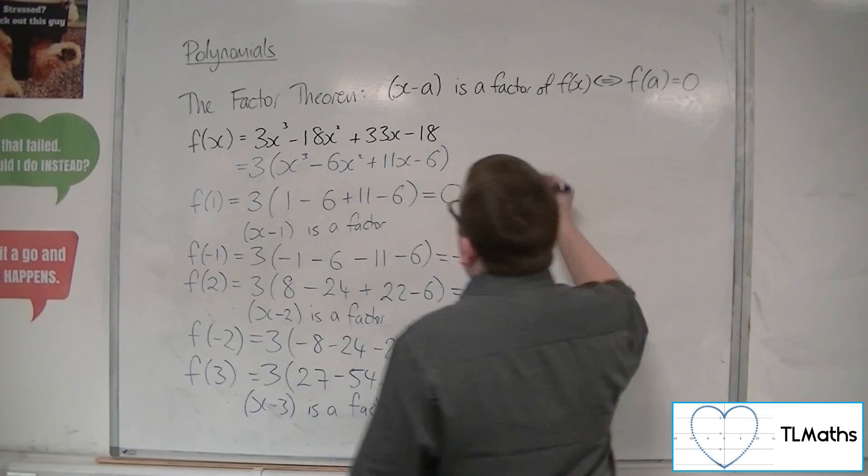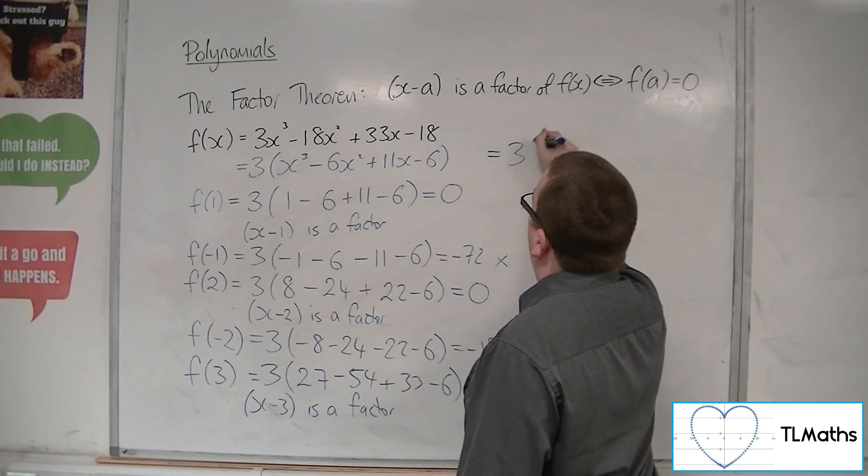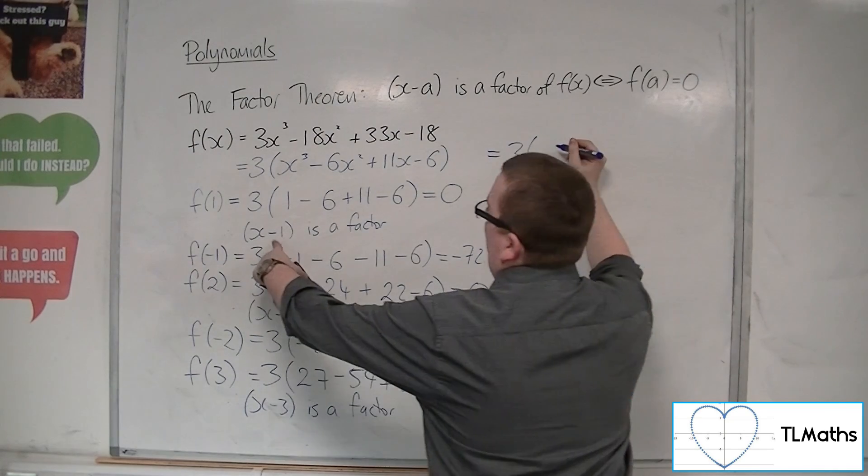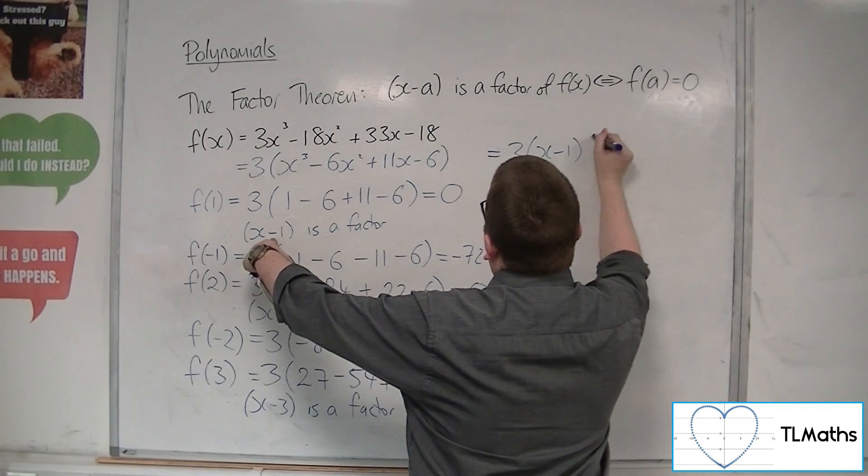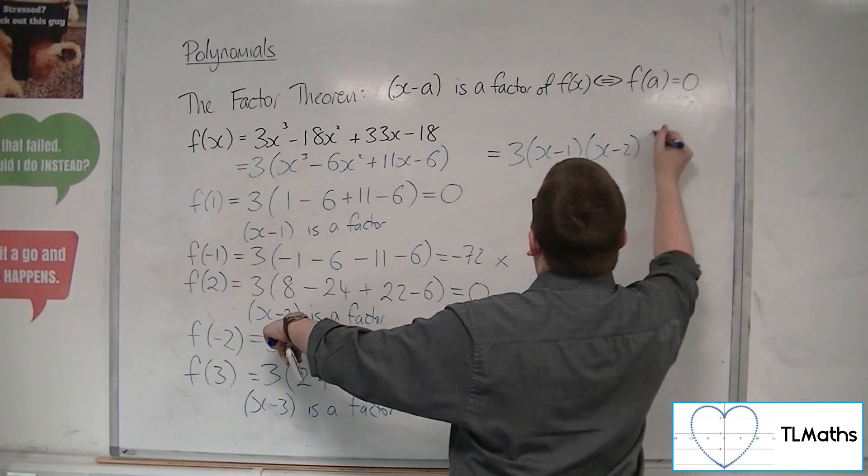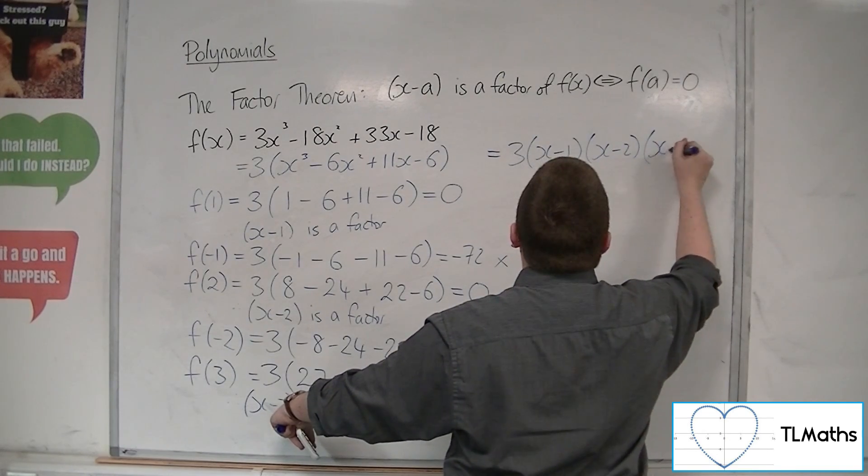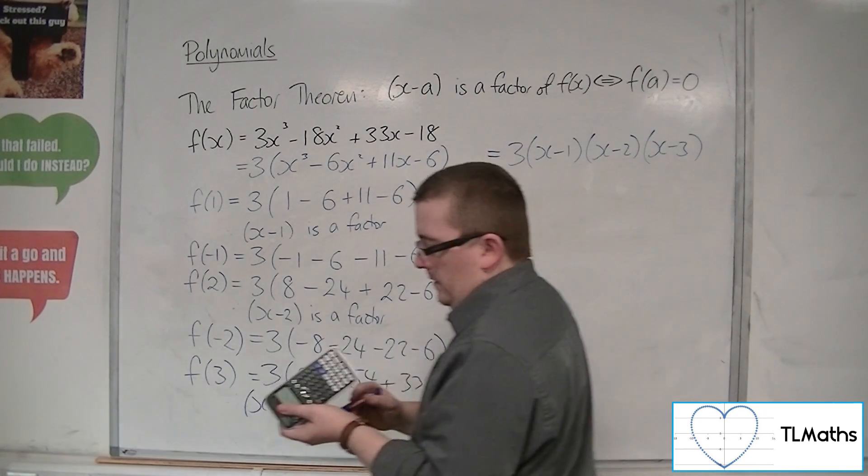So that means that we have our 3 factors. 3 lots of x minus 1, times x minus 2, times x minus 3.